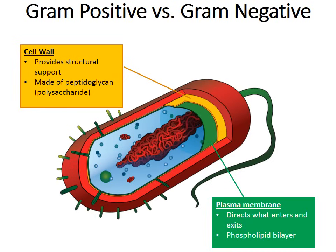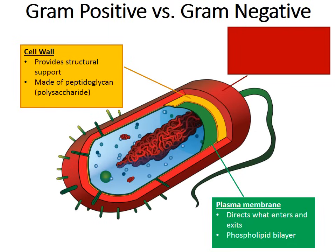The cell wall is really the most important of the three layers when it comes to understanding gram-negative and gram-positive bacteria. The third red outer layer is the capsule — it's more of a sticky outer layer for attachment and protection. But I really want you to focus on the cell wall.